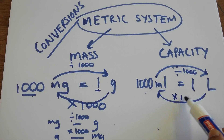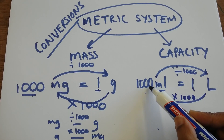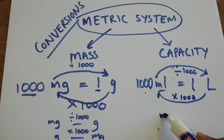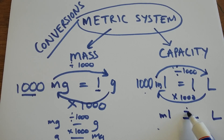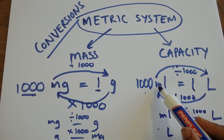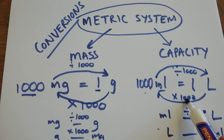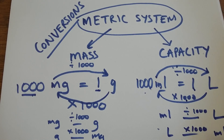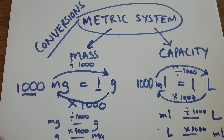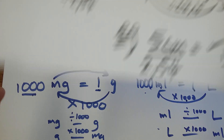When I go in the opposite direction, 1 becomes 1,000, so 1 times 1,000 equals 1,000. In summary: when converting from milliliters into liters, we divide by 1,000. That covers the metric system — mass and capacity. Now we're going to have a quick look at the imperial system.